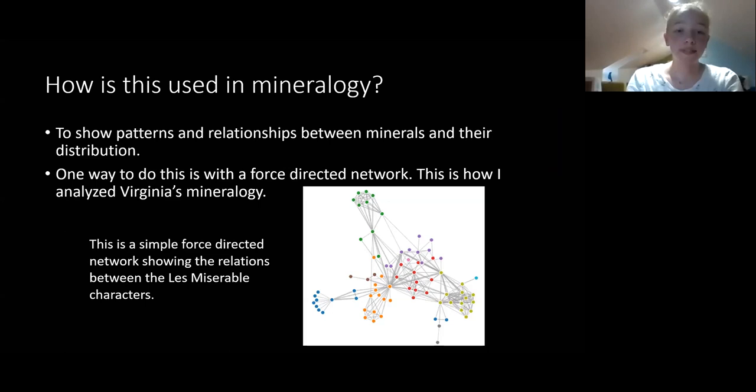And the third was, how is this used in mineralogy? It's used to show patterns and relationships between minerals and their distribution. One way to do this is with a force-directed network. This is how I analyze Virginia's mineralogy. The picture here is of a simple force-directed network, showing the relations between the Les Miserables characters. Each dot on this network represents a character from that book, and a connection between the two shows that those characters know each other. Characters in the center of the network are probably the main characters since they know the most people.